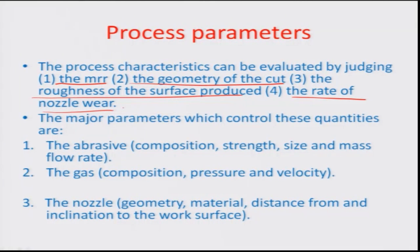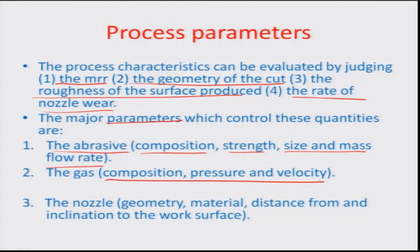The major parameters controlling these characteristics are: the abrasive — its composition, strength, size and mass flow rate in the gas; the gas — its composition, pressure and velocity; and the nozzle — its geometry, material, nozzle tip distance, distance from the workpiece, and its inclination with respect to the workpiece. These parametric issues control process characteristics like MRR, cut geometry, surface roughness, and rate of nozzle wear.